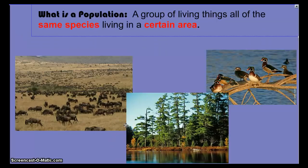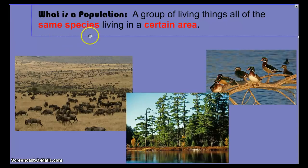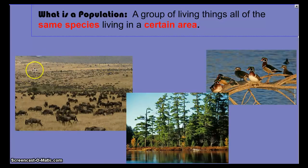First, let's define what a population is. A population is a group of living things all of the same species — that is one of the keys that must be in a good definition of a population — and they all must live in a certain area. For instance, the wildebeest in this picture on the plains of Africa are all the same species and all in a certain area, making them a population.